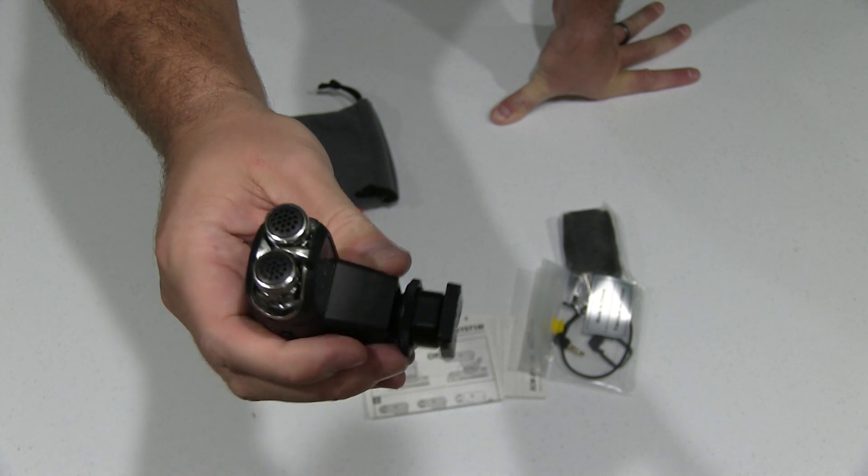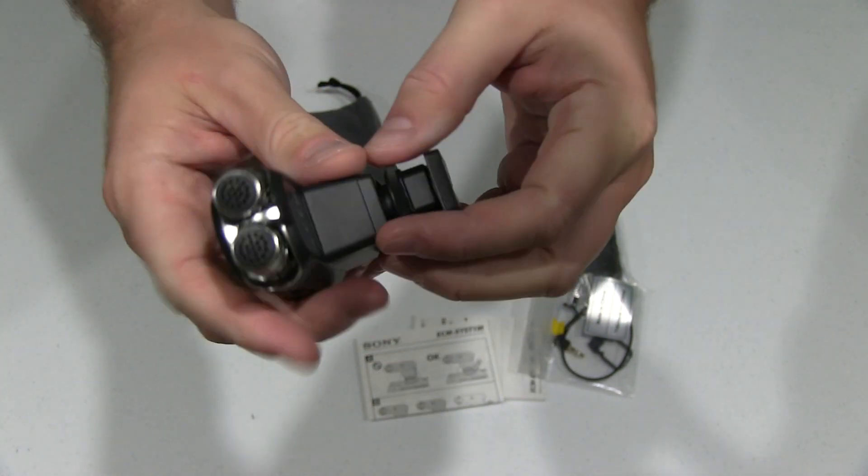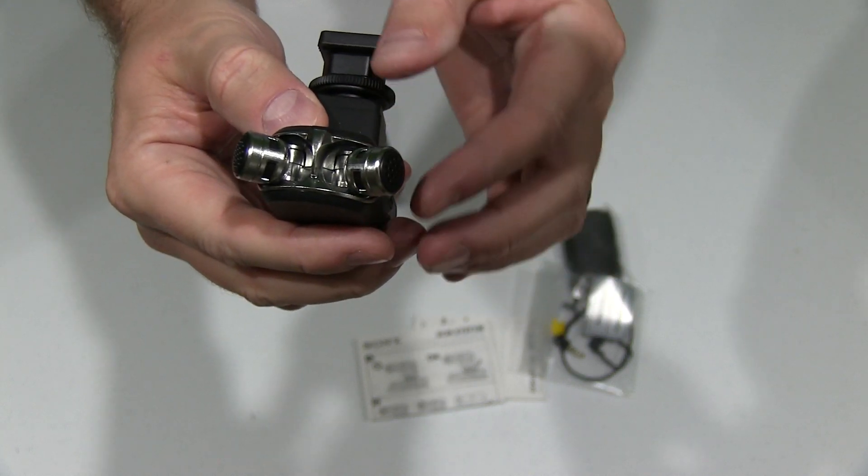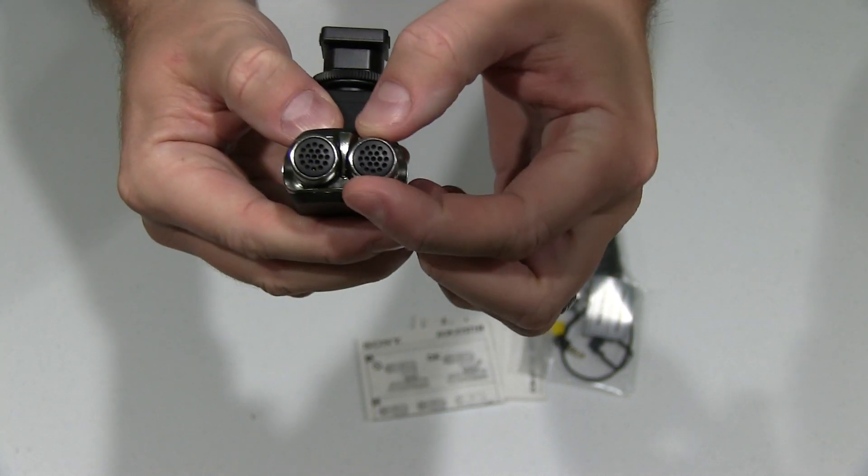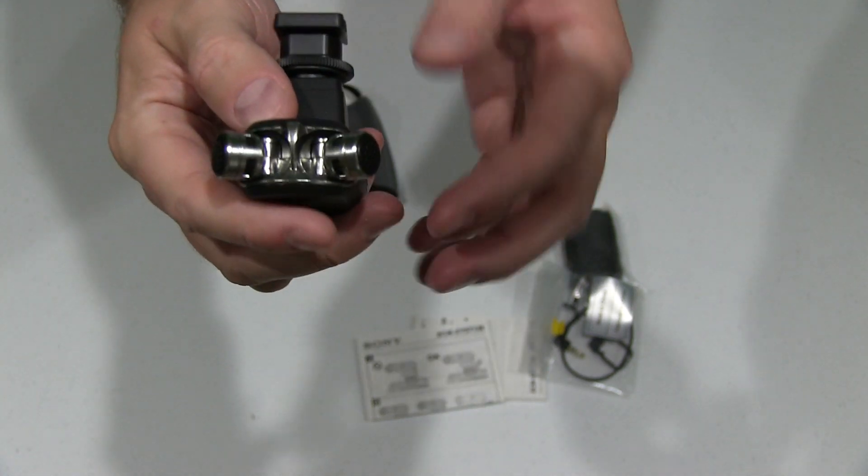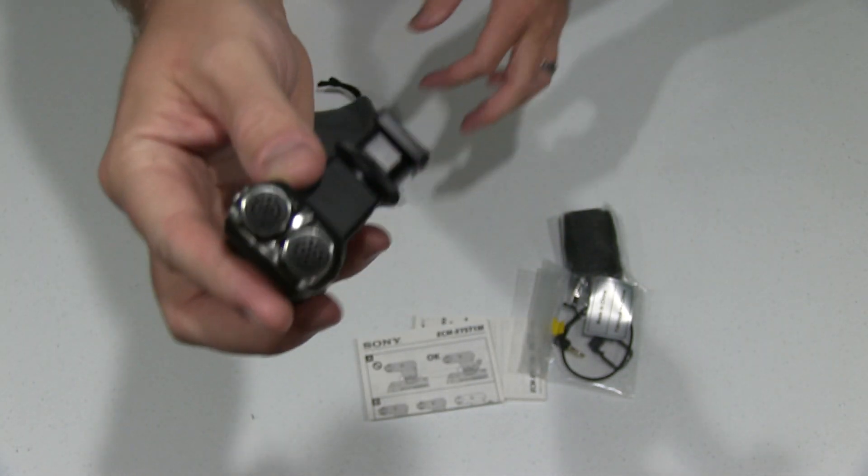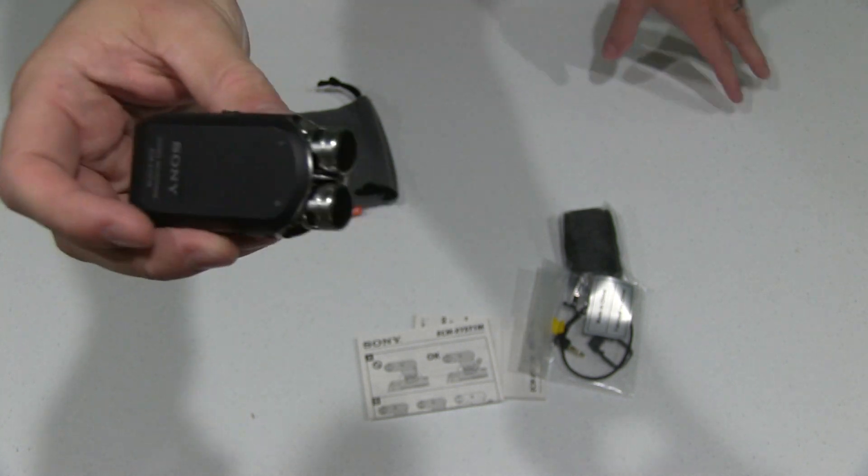It says Sony stereo microphone ECM-XYST1M. Looks kind of funny in the photos, but when you see it in person it's really neat. See, look, you push one and it does the other. So if you're in a concert or something and you want to get a wider scoop, you could. Or if you're filming a subject right in front of you, you can do that.